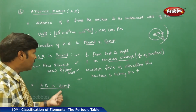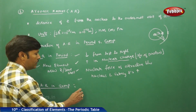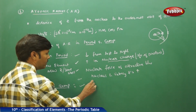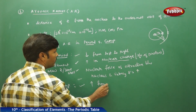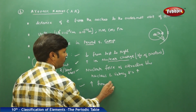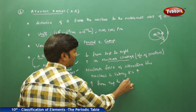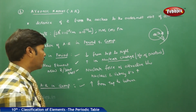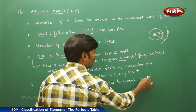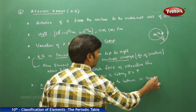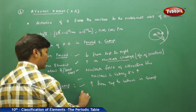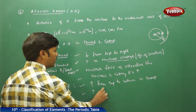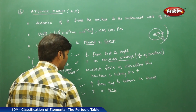If you go for atomic radius in a group, atomic radius increases from top to bottom. In a group, there is also an increase in nuclear charge (NC). However, along with the increase in nuclear charge, there is also an increase in the number of shells, and nuclear force of attraction also changes accordingly.